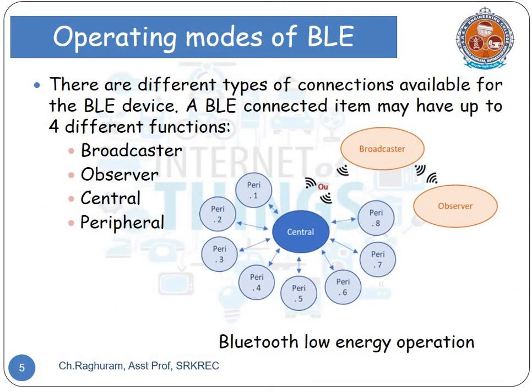The operating modes of BLE, Bluetooth Low Energy: there are different types of connections available for BLE devices. BLE connected items may have up to four different functions. The first is the broadcaster. The broadcaster shall be used as a server; its purpose is to transfer data to a device on a regular basis, but it does not support any incoming connections.